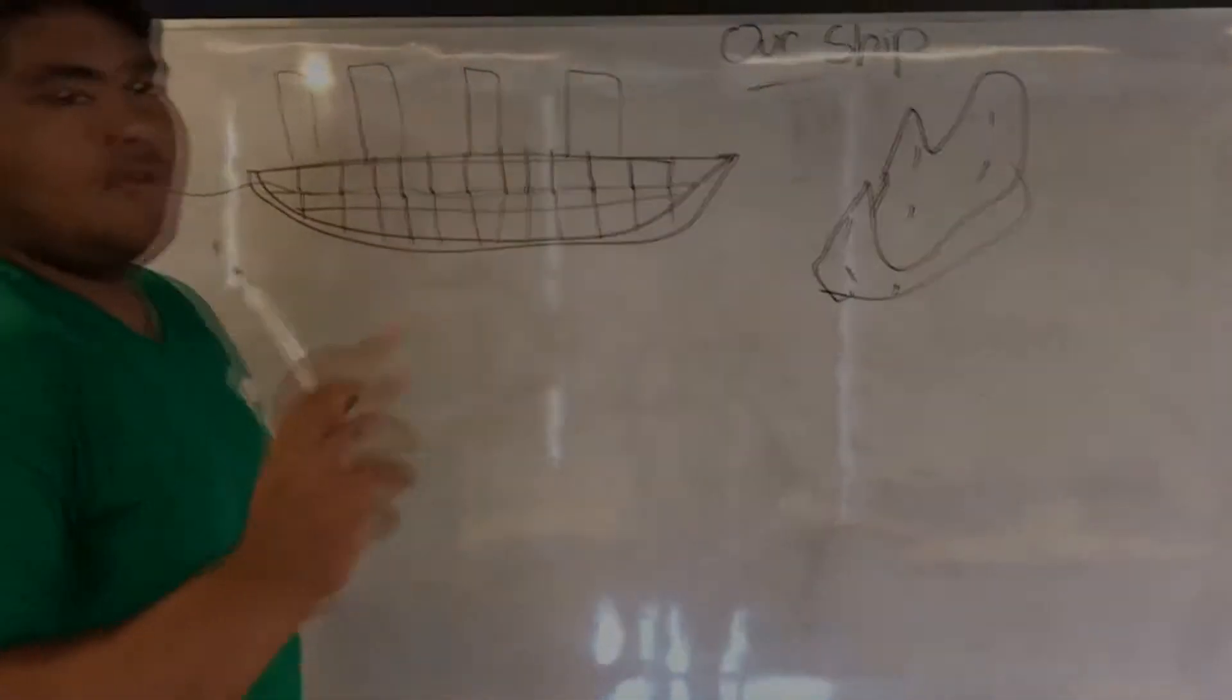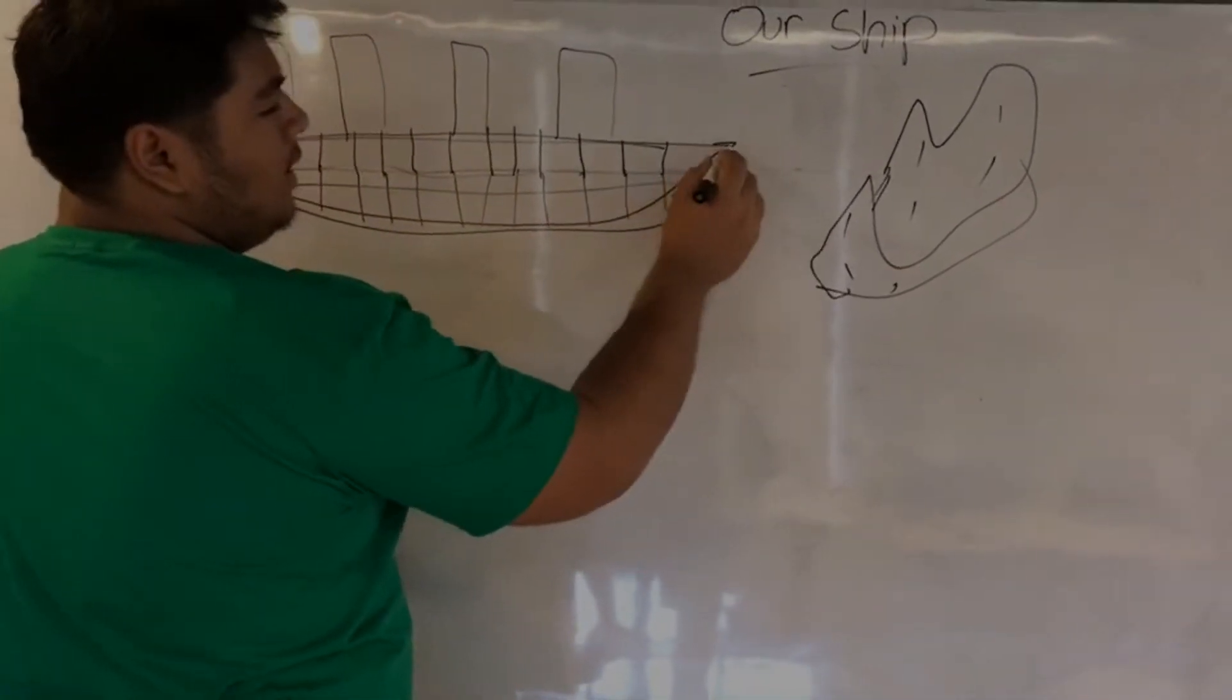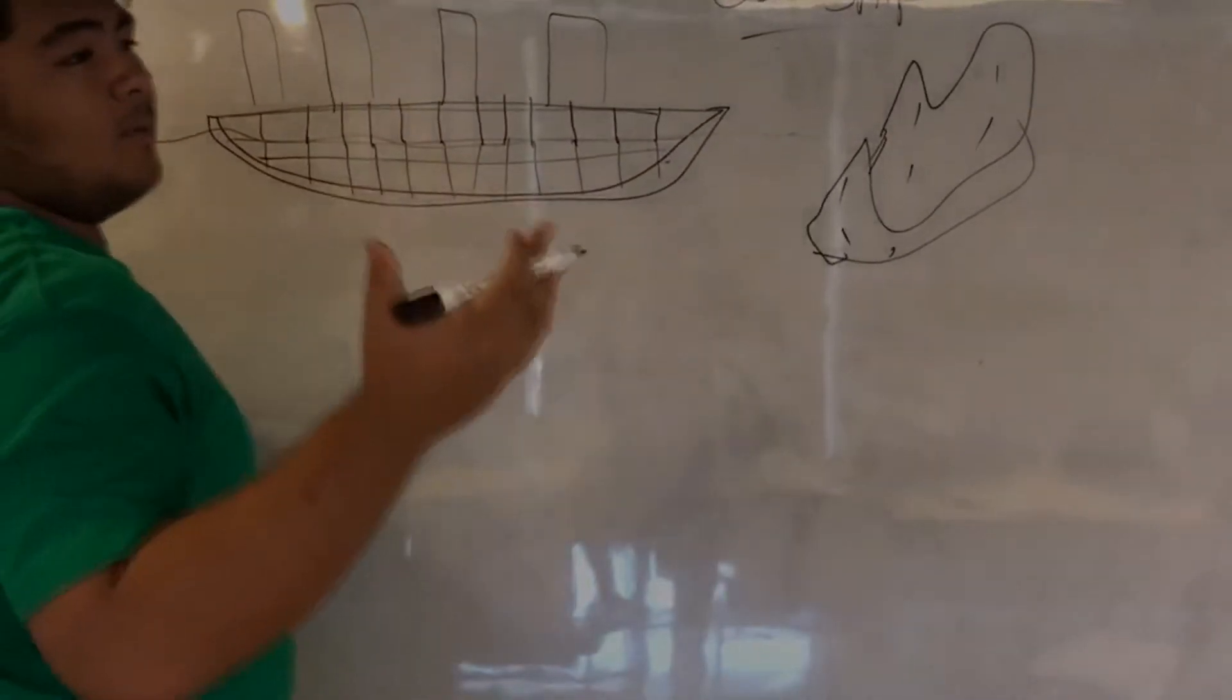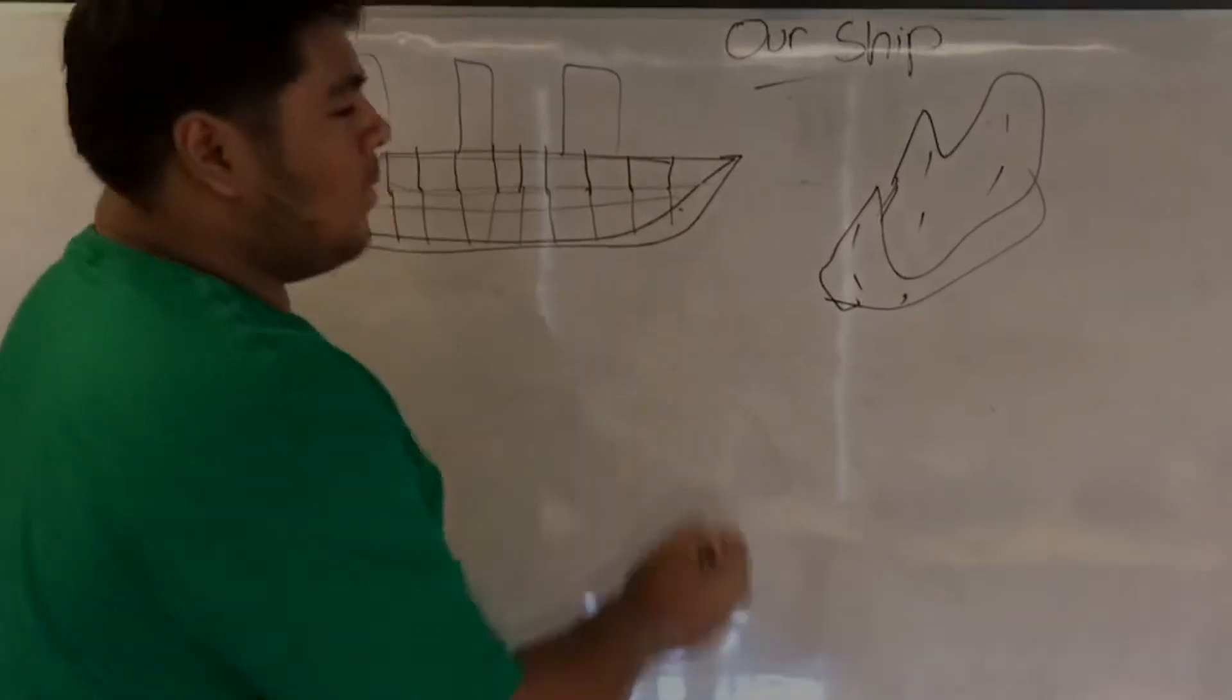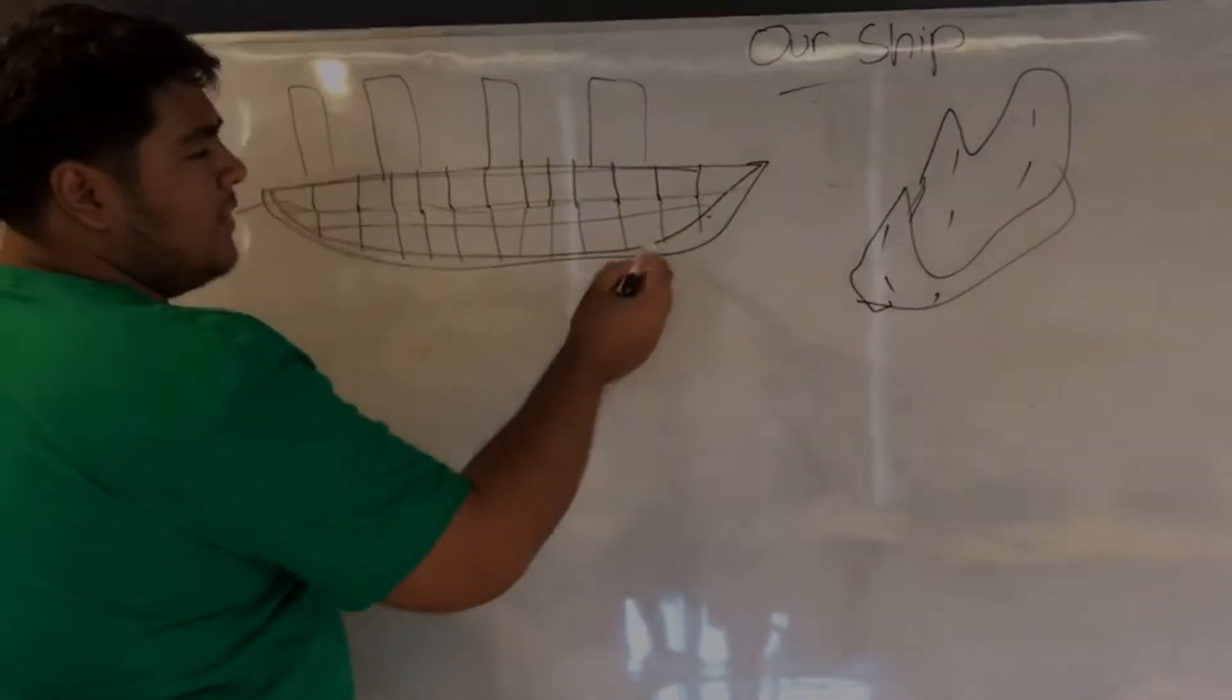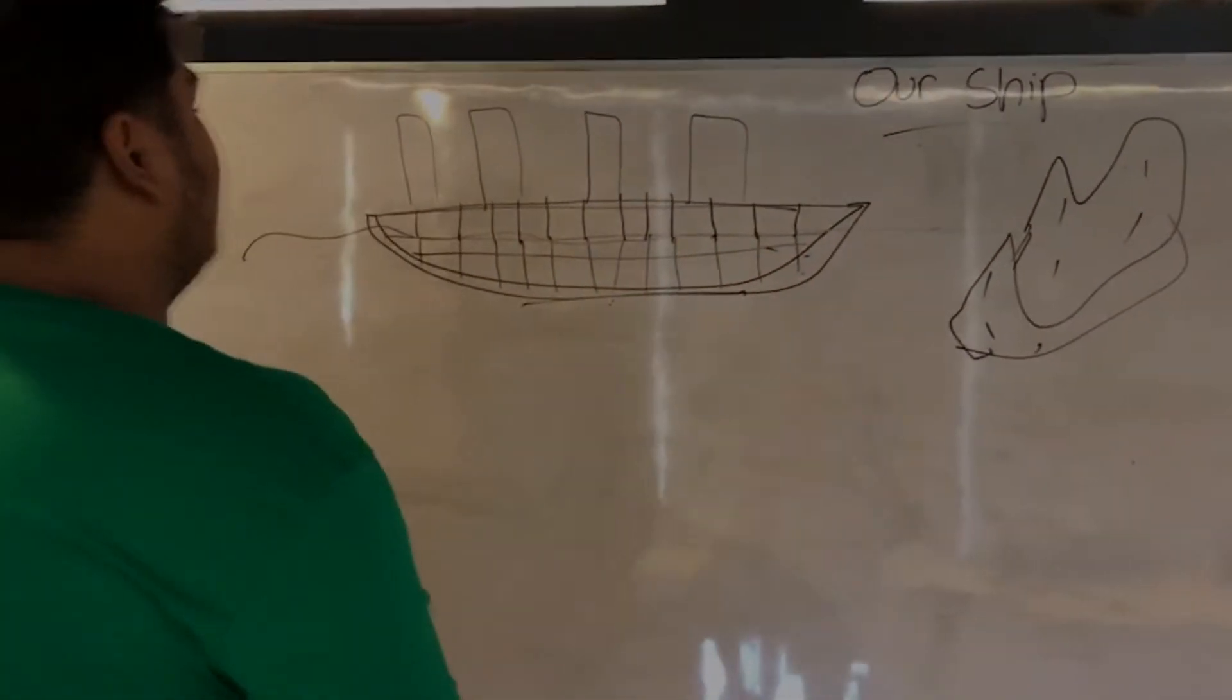Now, the two differences that we can see right over here is that, first things first, this is the double hull system. Where we basically have two layers of the hull itself. Unlike the Titanic where the Titanic only has a single hull with a double bottom, but we have a double hull with a double bottom.